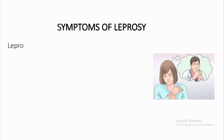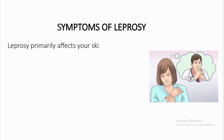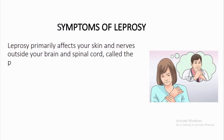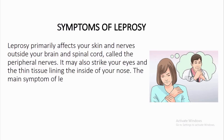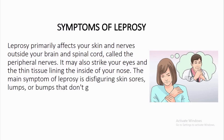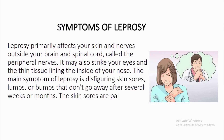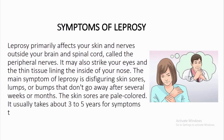Symptoms of leprosy. Leprosy primarily affects your skin and nerves outside your brain and spinal cord, called the peripheral nerves. It may also strike your eyes and the thin tissue lining the inside of your nose. The main symptom of leprosy is disfiguring skin sores, lumps, or bumps that don't go away after several weeks or months. The skin sores are pale-colored.